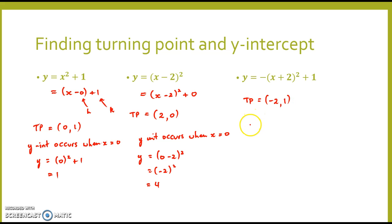And my y-intercept, again, so substituting for 0 in there, you notice we've got a negative as part of our equation. So 0 plus 2 all squared plus 1, 2 squared of course gives me 4.